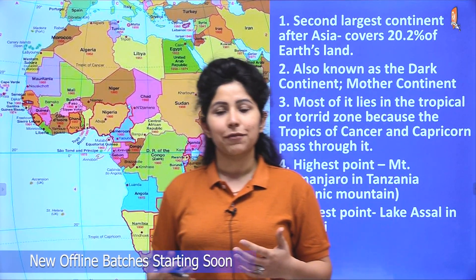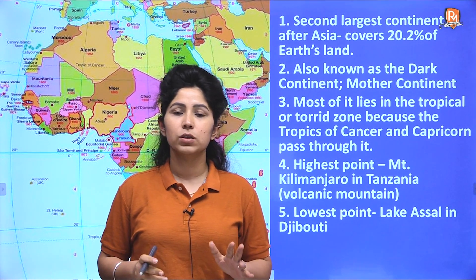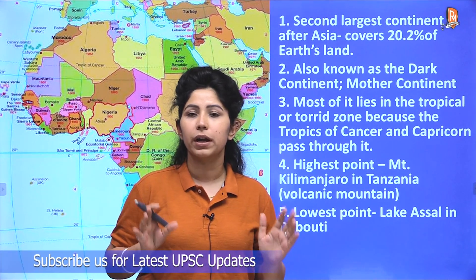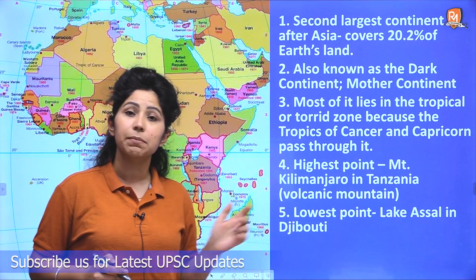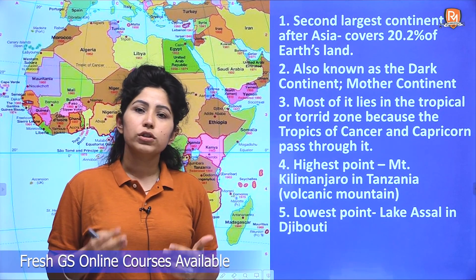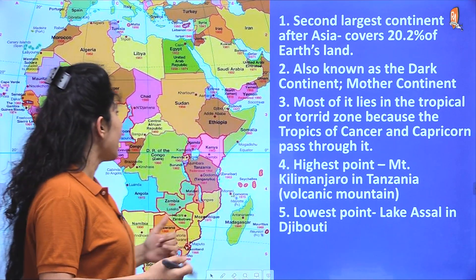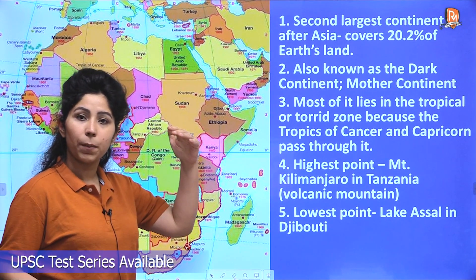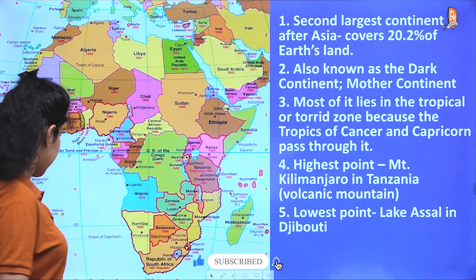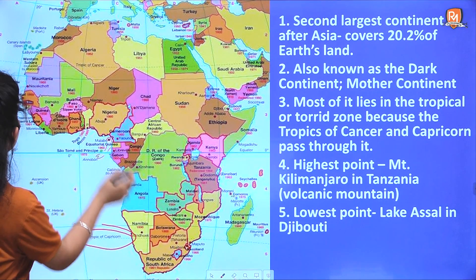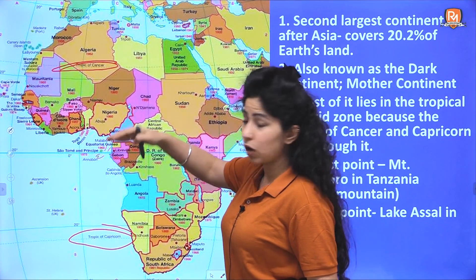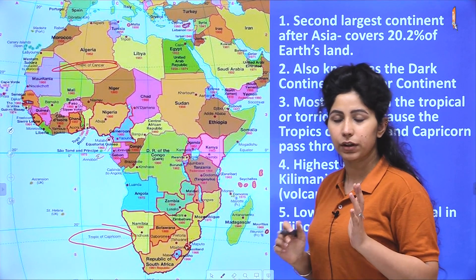Some important points to remember about Africa: it is the second largest continent right after Asia. It is also known as the dark continent — the history goes back to colonialism when white people wanted to introduce slavery in Africa, so they called it the dark continent. It is also known as the mother continent because it has been assumed that the human race originated from here. Most of Africa lies in the tropical or torrid zone because the Tropic of Cancer and Tropic of Capricorn both pass through it, so most of the continent is contained between both these tropics.